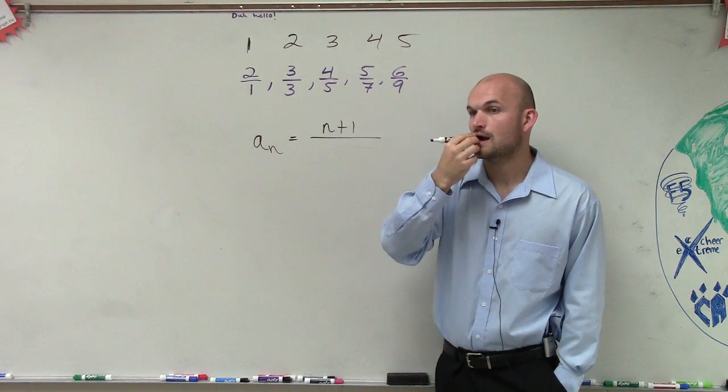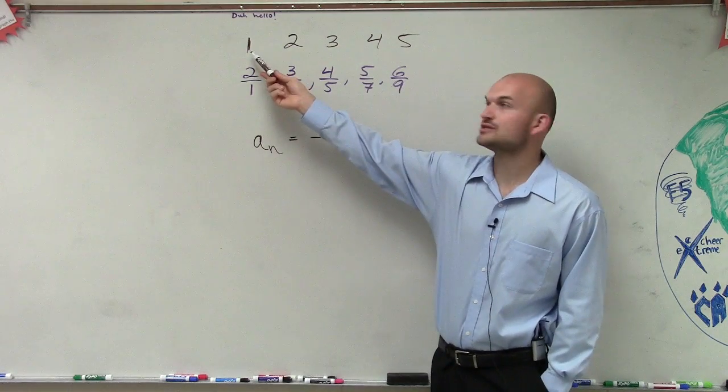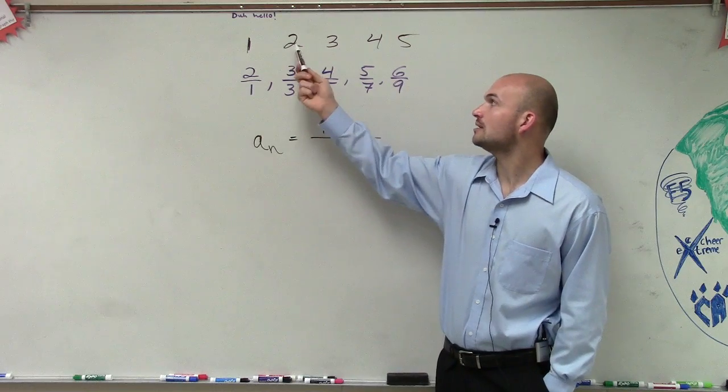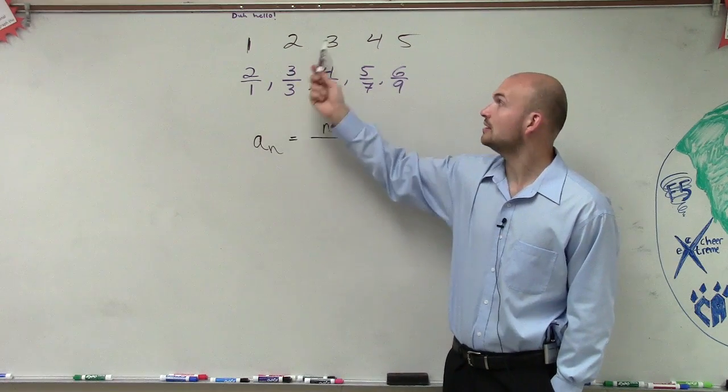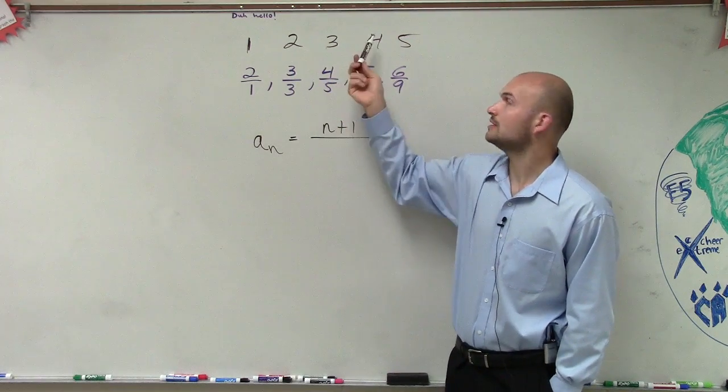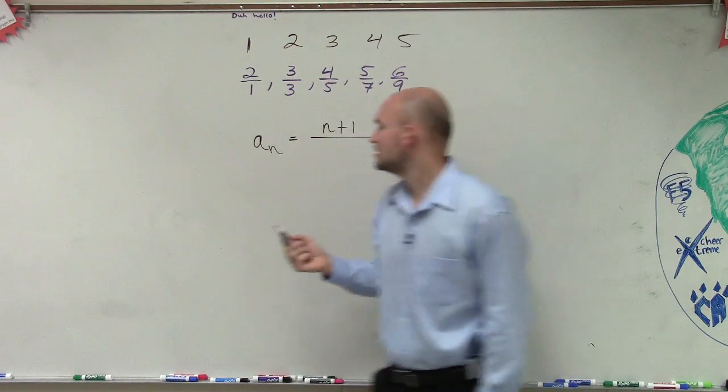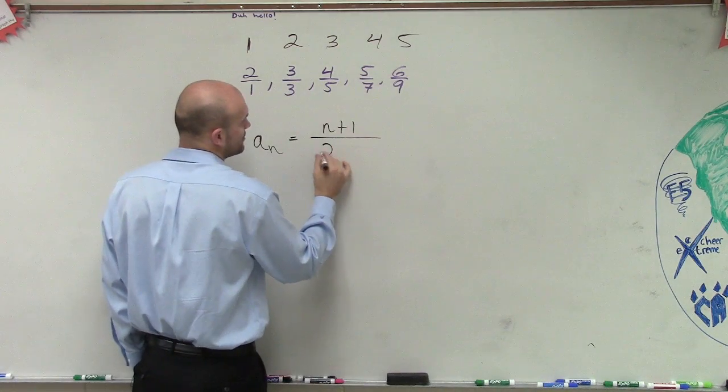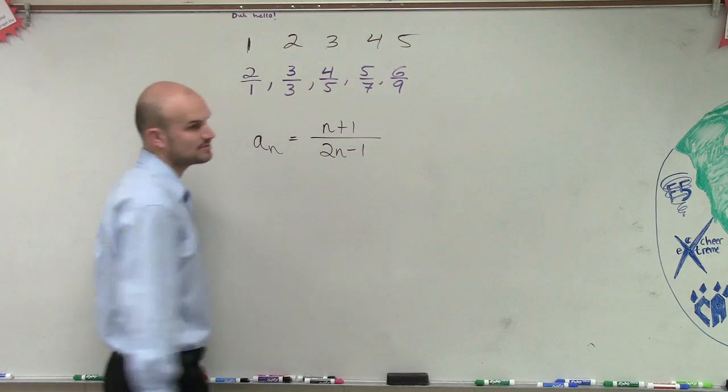You multiply by 2 and subtract 1. Let's see if that works. Multiply by 2, subtract 1. Yep. Multiply by 2, subtract 1. Multiply by 2, subtract 1. Multiply by 2, subtract 1. So therefore, in this one, it's just going to be 2n minus 1.